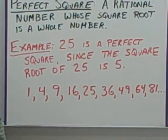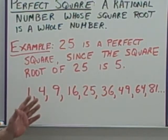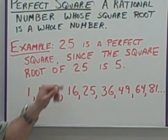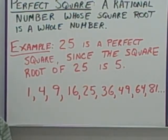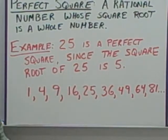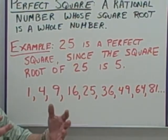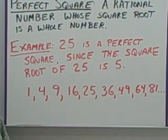Perfect square. A perfect square is a rational number whose square root is a whole number. These perfect squares are very important — we'll work more with them when we talk about estimating square roots. For example, 25 is a perfect square since the square root of 25 is 5. The square root of 26 is going to be 5 point something — it's not a whole number. Therefore, 26 is not a perfect square.